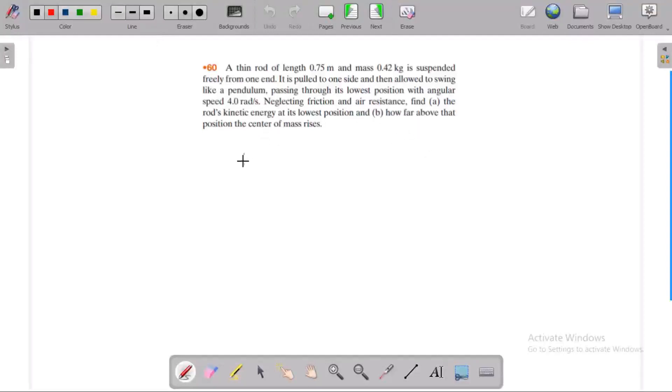A thin rod of length 0.75 m and mass 0.42 kg is suspended freely from one end. The length of the thin rod is 0.75 m and the mass of the rod is 0.42 kg.